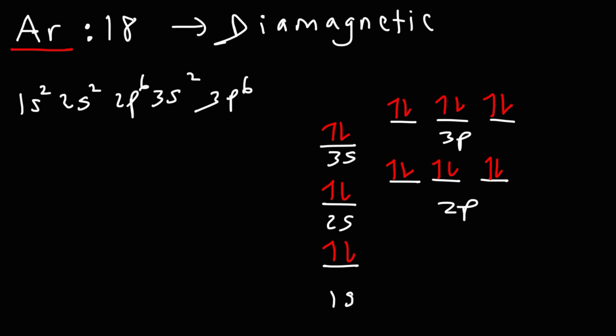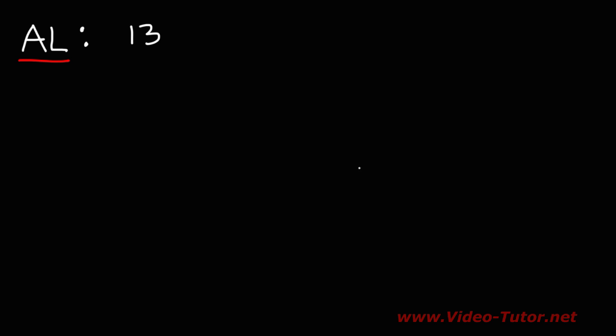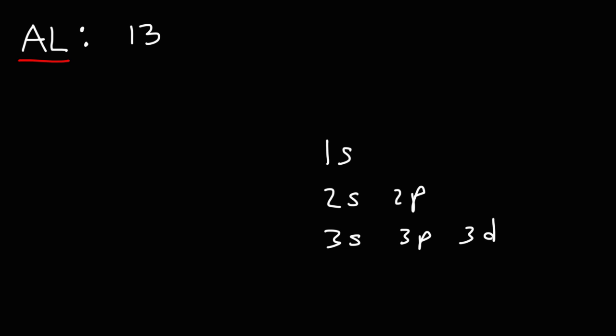A diamagnetic substance is one that is weakly repelled by an external magnetic field. Now let's work on another example — aluminum. Feel free to try this example. Aluminum has an atomic number of 13. It's in the third row, so we only need to go up to the third energy level.